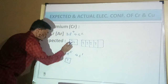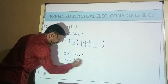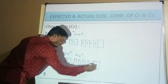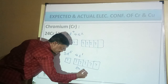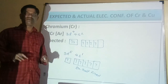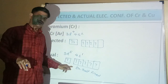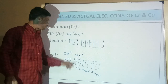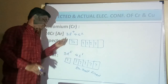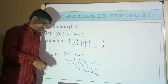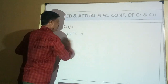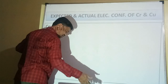The actual configuration of Cr is 4S¹ 3D⁵. The block diagram shows 3D⁵ as exactly half-filled since D orbitals have a capacity of 10 electrons and 5 are present. Chromium is found to be stable due to the exactly half-filled 3D⁵ orbital.